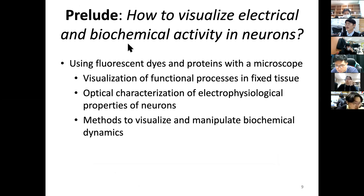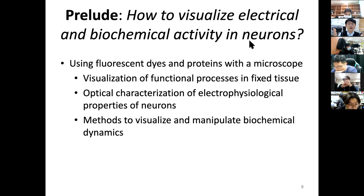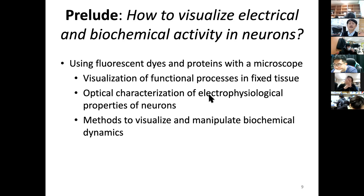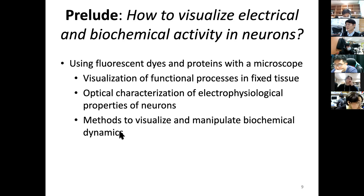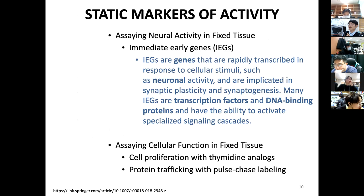With this introduction, I want to discuss how to visualize electrical and biochemical activity in neurons. Fluorescence is a fascinating tool because it provides specificity against a very dark background. Using fluorescent dyes and proteins with microscopy allows us to visualize functional processes even in fixed tissue. Optical characterization of electrophysiological properties of neurons can be done with fluorescent dyes. Let's get started with the functional aspects using static markers of activity.